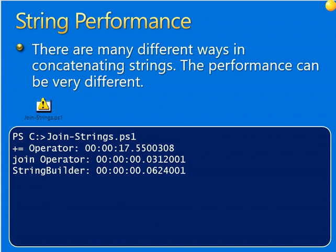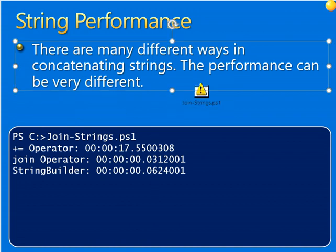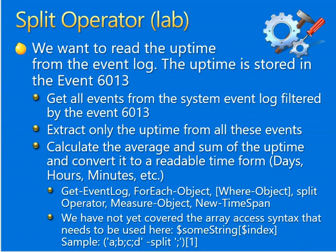There are many different ways of concatenating strings and the performance can be very different. I've got a test sample you can use as a lab — the join-hyperstring PS1 file will show you the performance around building strings and the monitoring side. You can read the unique value for event ID 6013, get all the same elements from the system, and extract only the uptime for all these events.